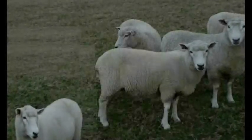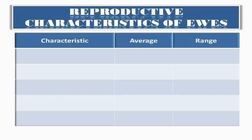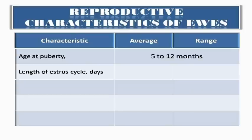Courting behavior displayed by the ewe varies with its hormonal condition. In sheep, the length of the estrus cycle ranges from 13 to 19 days and averages 17 days. The estrus phase is the period of time when the ewe is receptive to the ram and will stand for mating; it lasts approximately 24 to 36 hours.